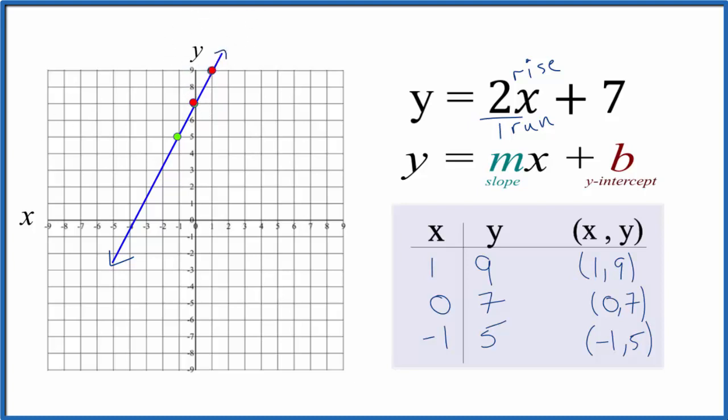So why don't we do the opposite? Why don't we go down 2 and over 1 this direction. Down 2 and over 1. So we just reverse directions. And we can keep doing this, all the points, they'll be on the line. That means we did this first part right when we graphed the equation y equals 2x plus 7.